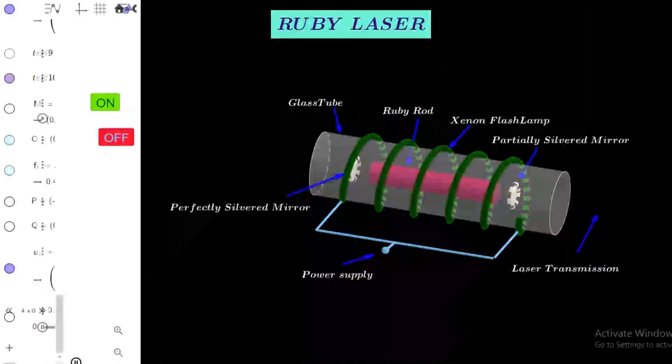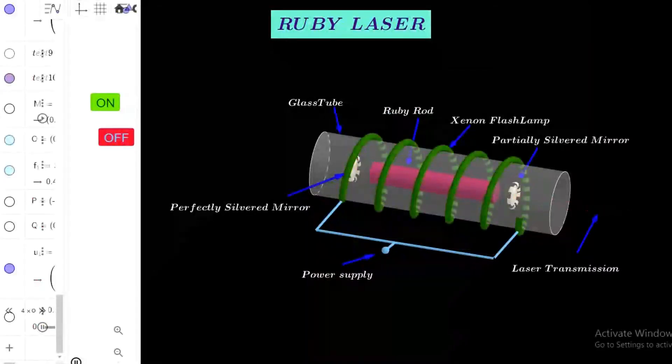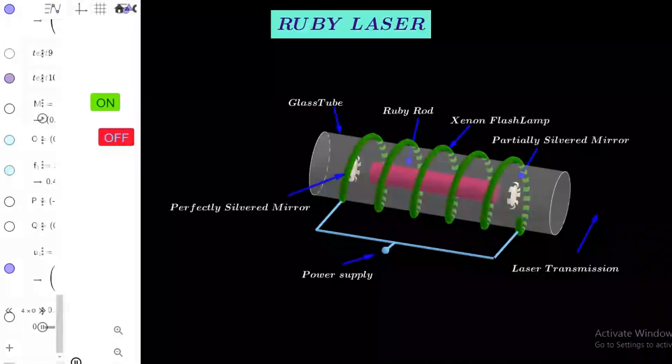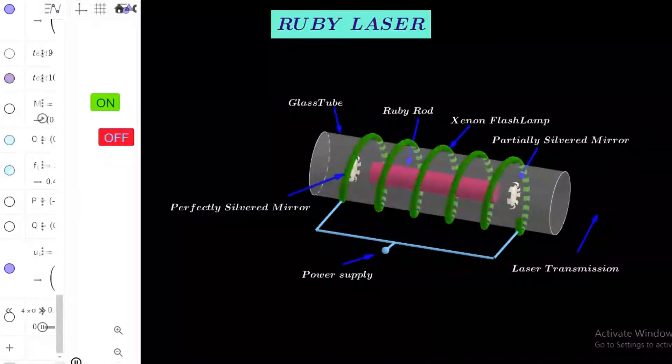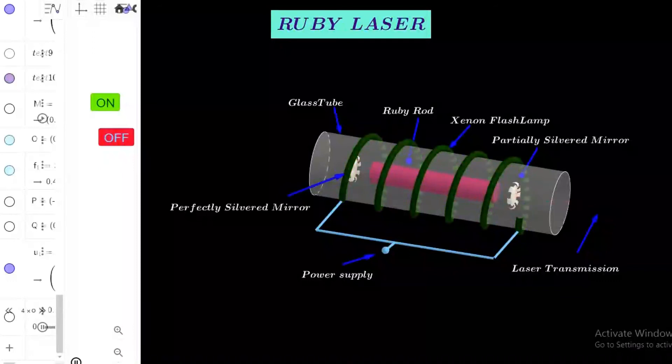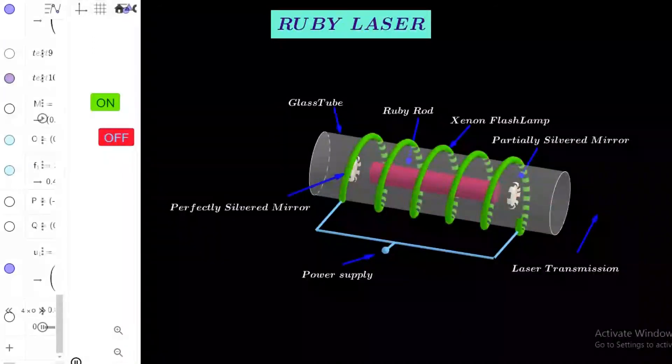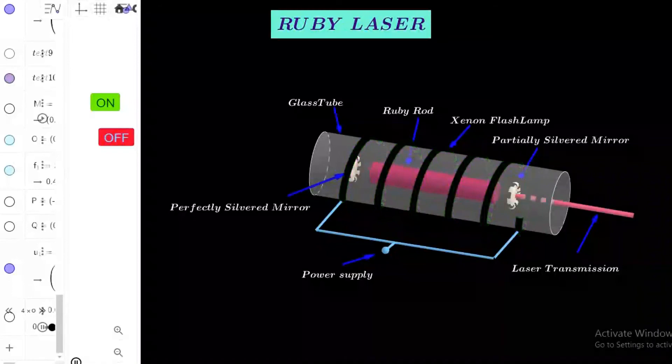Here we can observe xenon flash lasts for a few milliseconds. So, metastable state gets depopulated very rapidly and lasing ceases. The laser becomes inactive till the population inversion gets established once again. Therefore, output of lasing in this laser is pulsating in nature.